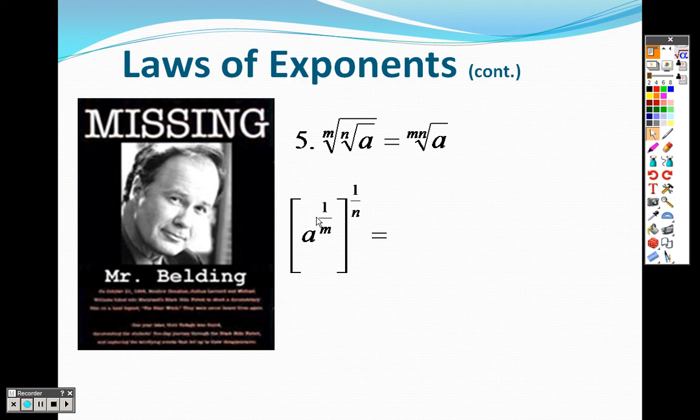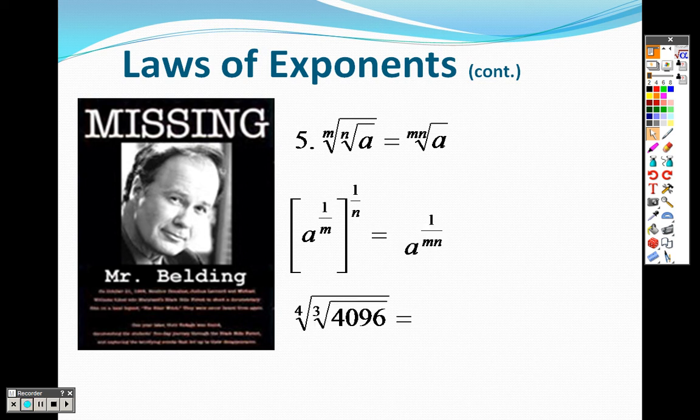With this problem, I have the fourth root of the third root of 4096. Well, 4 times 3 is 12, and the 12th root of 4096. For those who don't know how to type it in your calculator, you would do 4096 with a little caret sign, and you would take it all to the 1/12th power. That actually gives you 2 as your answer.